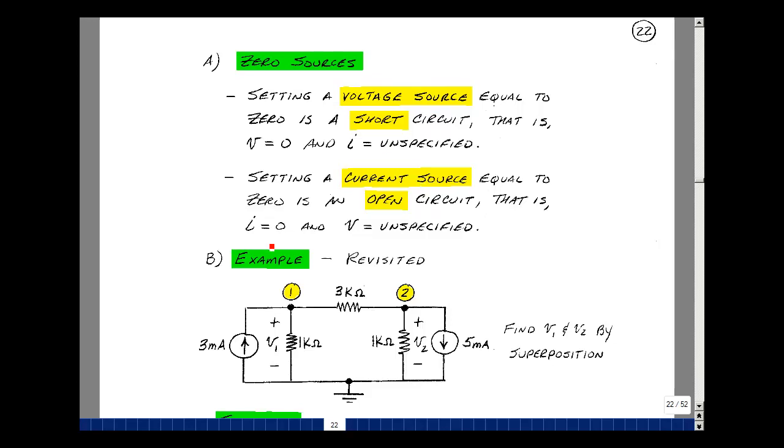Likewise for a current source, we have a given value of current and an arbitrary voltage across it or unspecified. Set that now equal to 0, you still have this condition, where the voltage across the current source is still arbitrary or unspecified. But that's our definition of an open circuit. Setting a current source equal to 0 is replacing it by an open circuit.